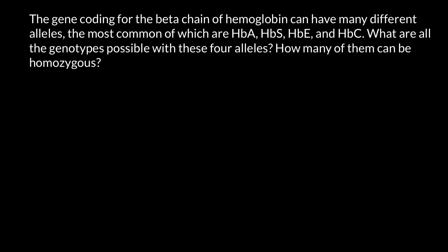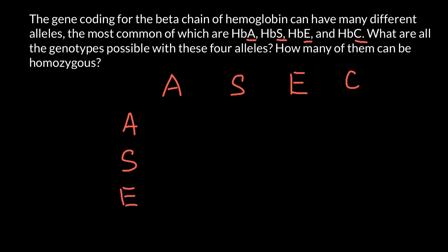How many of them can be homozygous? In order to answer this question, let me use only the last letter in the name of each allele. So basically we have to build a simple Punnett square. We have allele A, allele S, allele E, and allele C on both axes.